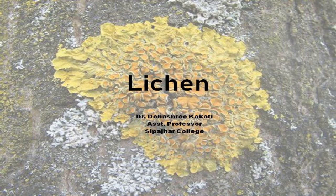Lichens are a symbiotic association between a fungus (mycobiont) and an alga (phycobiont). The fungal partner is usually an Ascomycota and sometimes a Basidiomycota. The algal partner is mostly a green alga, that is Chlorophycean members, or maybe a cyanobacterium.